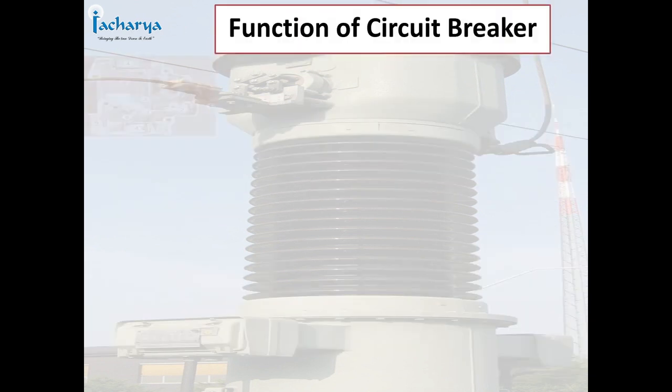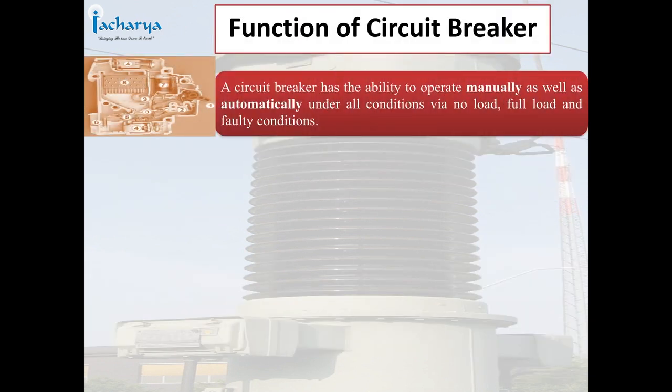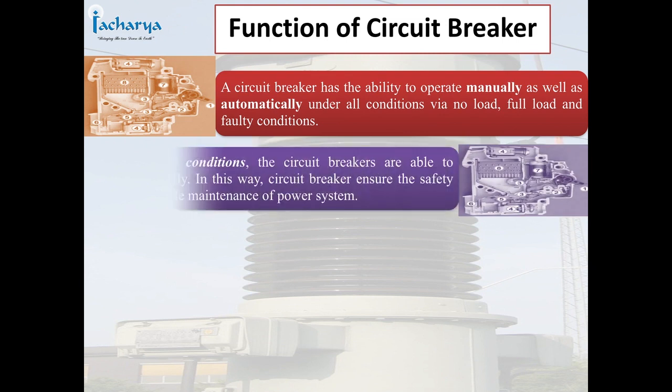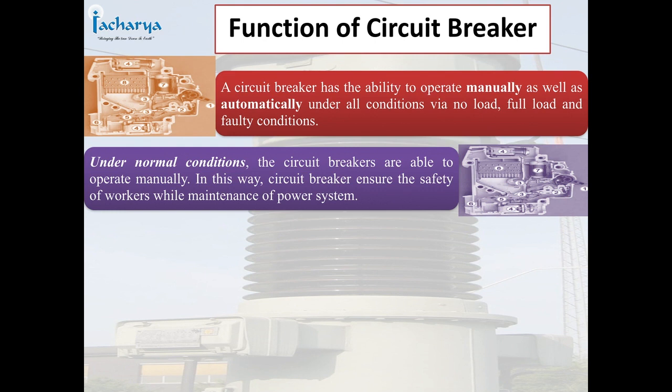A circuit breaker has the ability to operate manually as well as automatically under all conditions — no load, full load, and faulty conditions. Under normal conditions, the circuit breakers are able to operate manually. In this way, the circuit breaker ensures the safety of workers during maintenance of the power system.